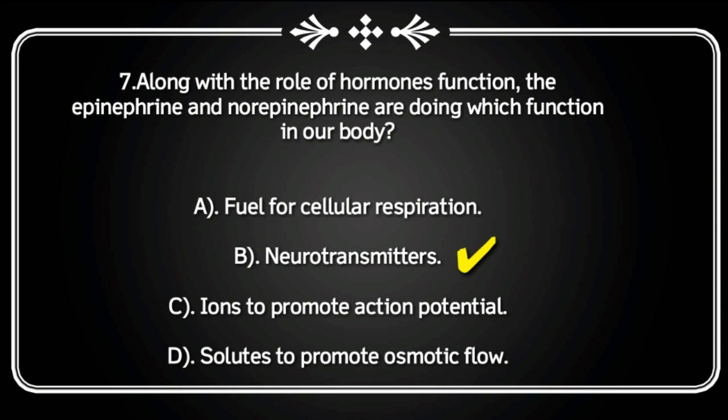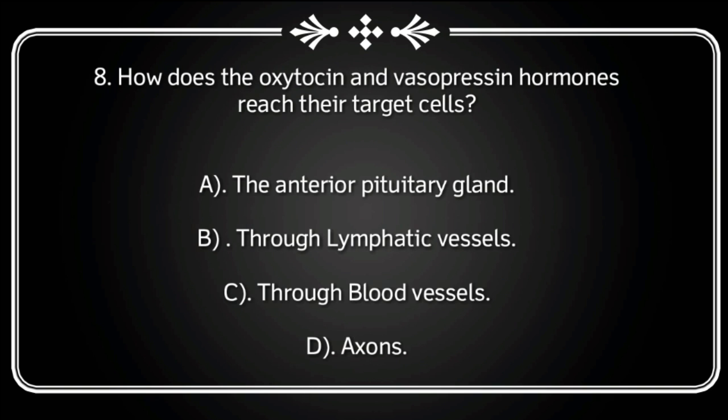Next question: How do oxytocin and vasopressin hormones reach their target cells? Through the anterior pituitary gland, through lymphatic vessels, through blood vessels, or through axons? Correct answer is through blood vessels.